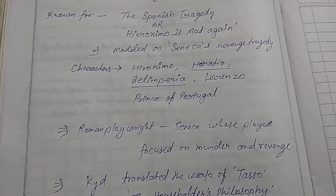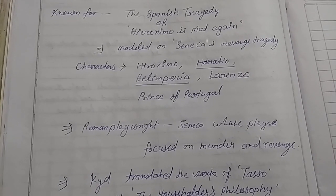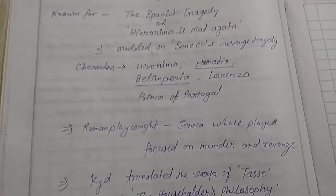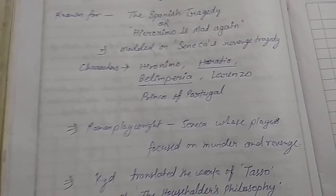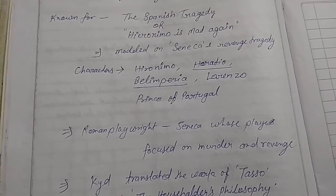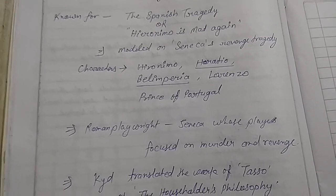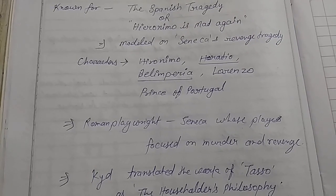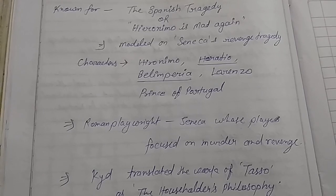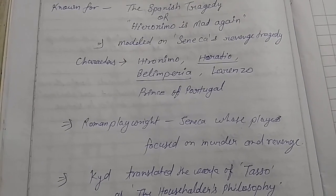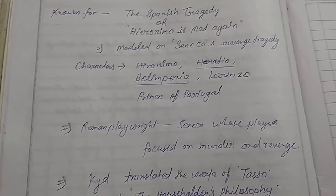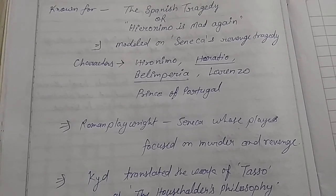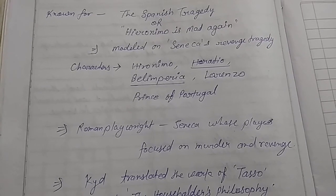It's a story of Hieronimo, Marshal of Spain, and his son Horatio. Horatio, the son of Hieronimo the Marshal, is in love with Bel-Imperia. But the brother of that beautiful lady, Bel-Imperia — Lorenzo — was against this marriage or this relation. So he tried to murder, and succeeded in murdering Horatio, the son of Hieronimo, with the help of the Prince of Portugal, because Lorenzo wanted her to marry that Prince of Portugal.